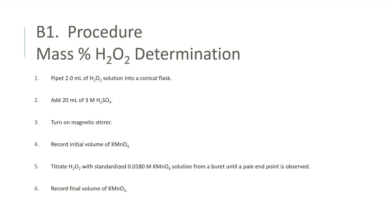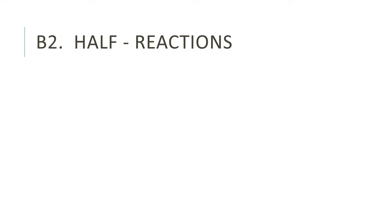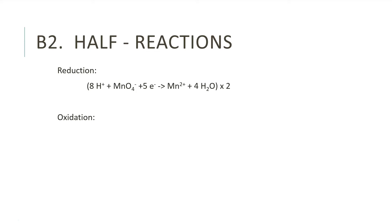B2: Half Reactions. The first reaction shows the reduction of the permanganate solution and the hydrogen peroxide solution, and the second equation shows the oxidation. The first equation shows the final balanced equation.